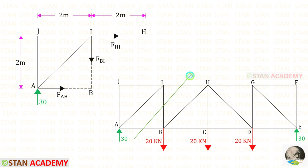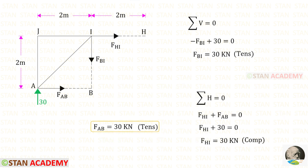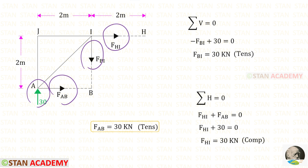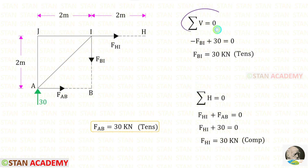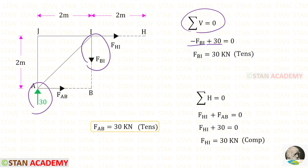Now I am going to make the third section and take the left side portion for analysis. There is no inclined force here — only vertical and horizontal forces. Applying sigma V equals zero: 30 is acting upwards (positive) and FBI is acting downwards (negative). For FBI we get 30 kilo-Newton, tensile.